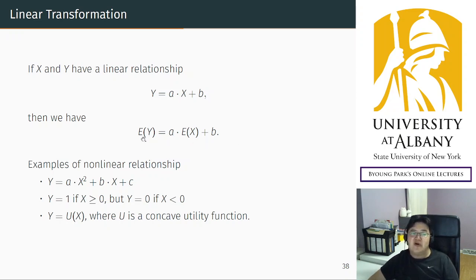And then we have this result. The expected value of the new random variable Y can be calculated simply from the relationship. If you know the original variable's mean, then it's simple. However, as I said, the condition is linearity. The relationship must be linear, and you have to tell if they satisfy the linear relationship.